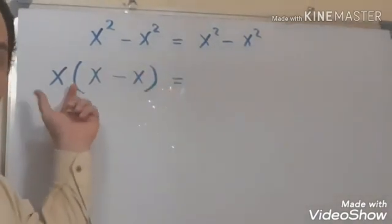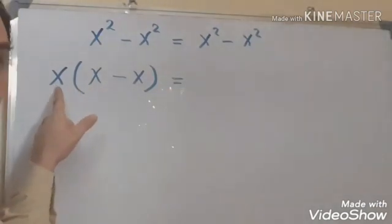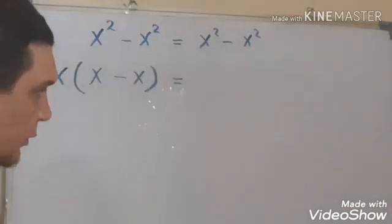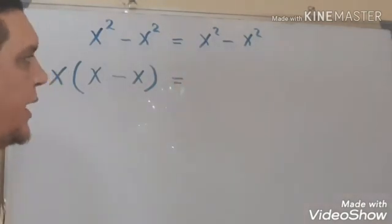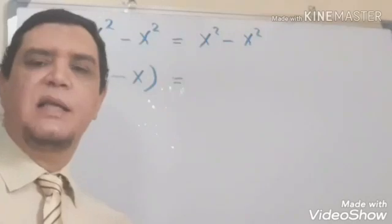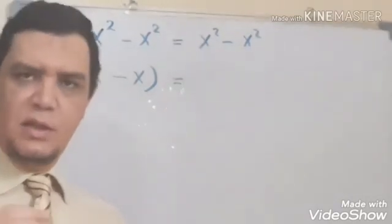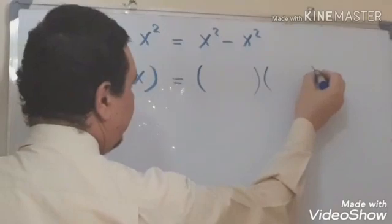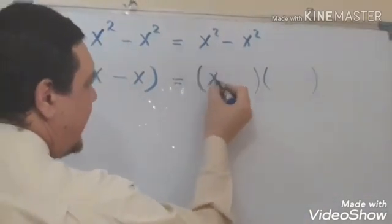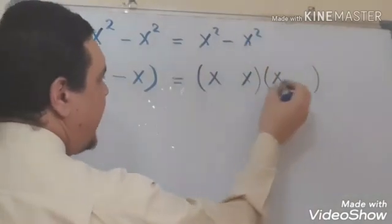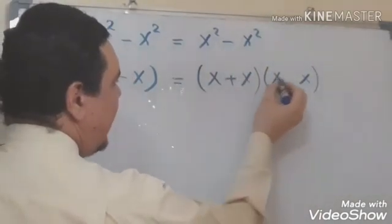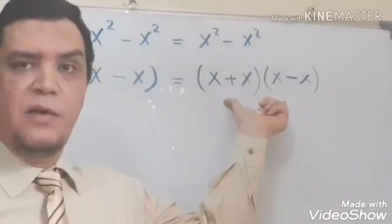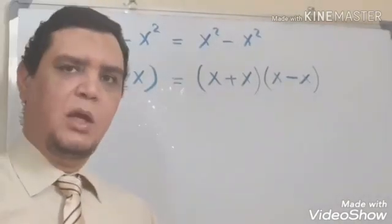Then in the left side I will take a common factor x from x power 2 minus x power 2. On the left side I will use another operation, difference between two squares. Factorize, open two brackets. x power 2, x phi x. Plus and minus, difference. This operation is factorizing difference between two squares.